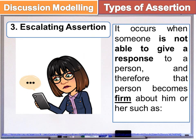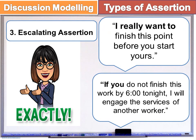Number three: Escalating Assertion. It occurs when someone is not able to give a response to a person and therefore that person becomes firm. Such as: 'I really want to finish this point before you start yours.' Another example: 'If you do not finish this work by six o'clock tonight, I will engage the services of another worker.'